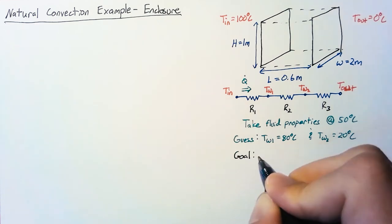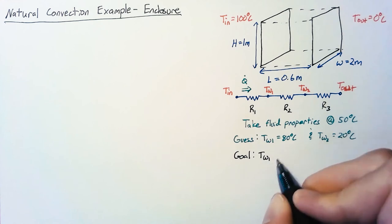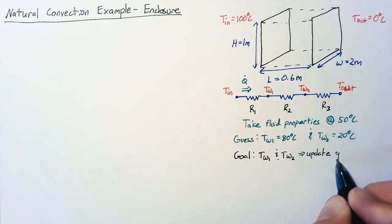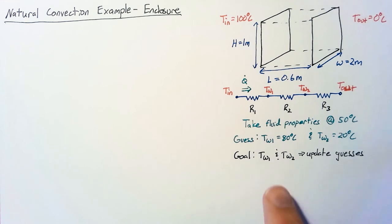Now our goal here is to update our guesses for T_W1 and T_W2. Normally we would want to do multiple iterations until these values stopped changing, however for this problem we're only going to run through a single iteration, update the values and then call it done.